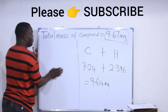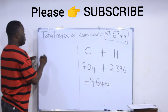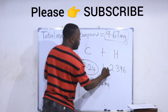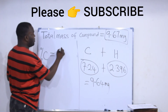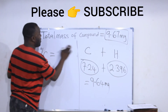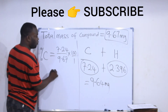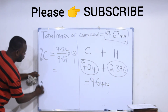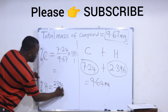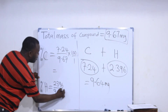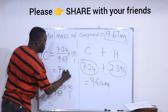Now let's answer the question: what is the percentage of carbon and hydrogen present in the compound? The percentage of carbon equals (mass of carbon / total mass) × 100 = (7.24 / 9.67) × 100. The percentage of hydrogen equals (2.396 / 9.67) × 100. Calculating these gives approximately 74.9% for carbon and 24.8% for hydrogen.